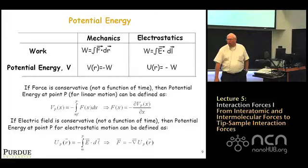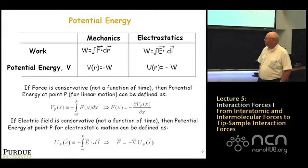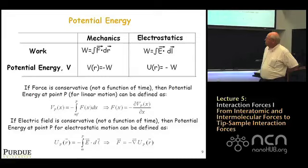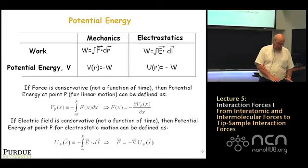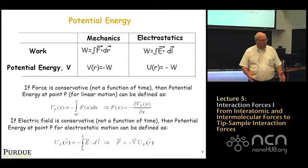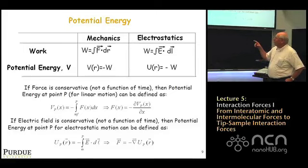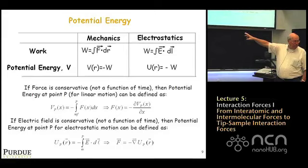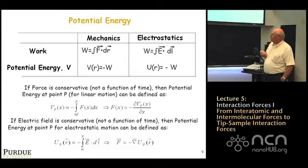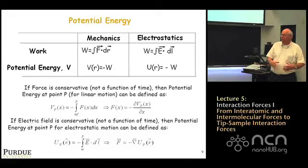Another important quantity in electrostatics is electrostatic potential energy, defined analogously to mechanical potential energy. It goes back to the definition of work: if you exert a force over a distance, you do work on an object and change its mechanical potential energy. The potential energy is related to the work by a minus sign. In electrostatics, the work is the charge times the electric field dotted into the path — E·dL — and the potential energy U(r) is defined as the negative of that work.